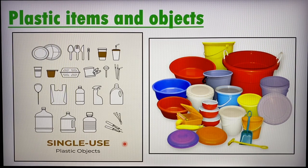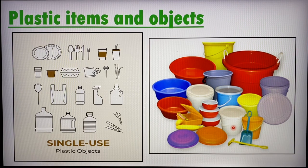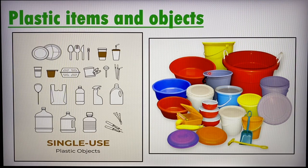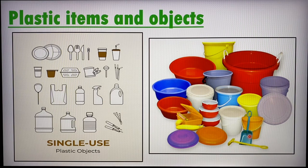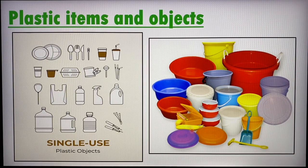There's a lot of carbon footprint. Over here on the right side, these are more of a reusable kind of plastic. You can see pails, containers, tupperware, lunchboxes, or even your spade or some of your toys. These are made of reusable plastic.